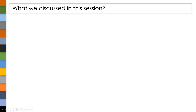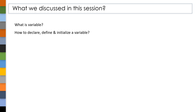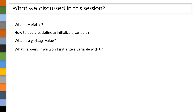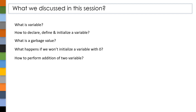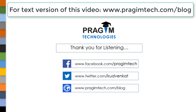In today's session, we discussed what a variable is and how to declare, define, and initialize a variable. We also saw what is meant by a garbage value and what happens if we don't initialize a variable with 0. Finally, we saw how to perform addition of two variables. In our next session, we will see about local and global variables and their scope and lifetime. Thank you for listening. See you in the next session.